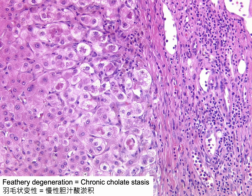Feathery degeneration is characterized by injured hepatocytes exhibiting cellular swelling and rarefaction of the cytoplasm, with several Mallory-Denk bodies also observed. This type of degeneration arises from the detergent effect of retained bile salts, known as chronic cholestasis in cholestatic conditions. Morphologically, feathery degeneration closely resembles ballooning degeneration on light microscopy, especially when containing Mallory-Denk bodies, and both types fail to express cytoplasmic CK8/18.